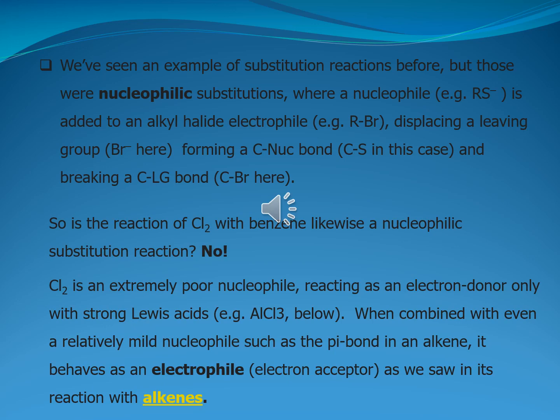Is the reaction of chlorine with benzene like a nucleophilic substitution reaction? No. Chlorine is an extremely poor nucleophile, reacting as an electron donor only with strong Lewis acids such as aluminum trichloride. When combined with even a relatively mild nucleophile such as the pi bond in an alkene, it behaves as an electrophile — an electron acceptor — as we saw in its reactions with the alkenes.